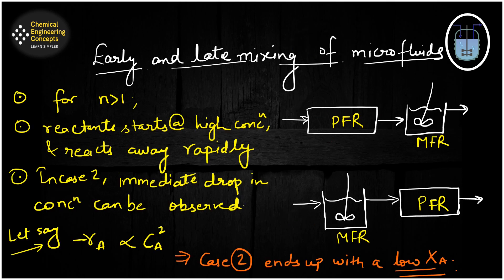Now let's understand the earliness and lateness of mixing for micro fluids. We consider an order of reaction greater than one, with two cases: first, a PFR in series with an MFR, and second, an MFR in series with a PFR. In the first case, since we have a PFR at the start, the reactant enters at a very high concentration and reacts away rapidly, because with reaction order two the reaction rate is directly proportional to the initial concentration.